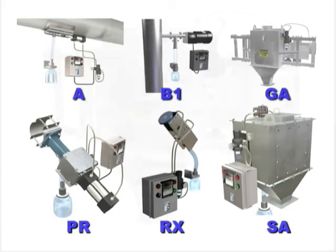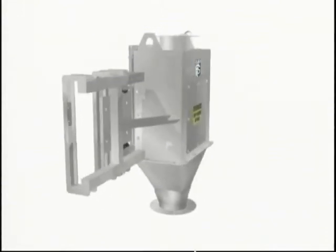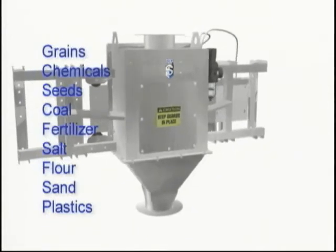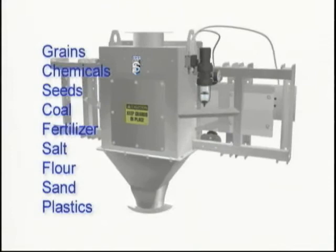The Century Model GA is a cross-cut sampler which may be implemented in a wide variety of applications. Typical applications include grains, chemicals, seeds, coal, fertilizer, salt, flour, sand, and plastics.